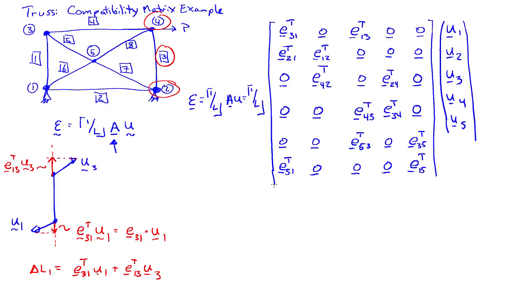And we still have two more bars to go. We have to do bar 7. That connects 5 and 2. So 0, E52 transpose, 0, 0, E25 transpose.